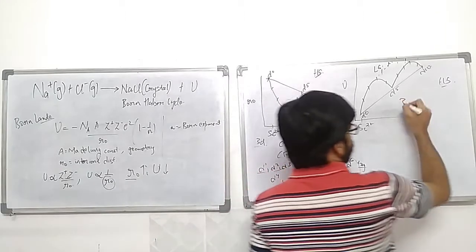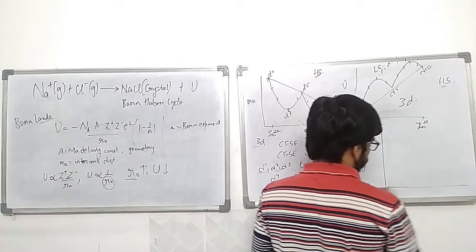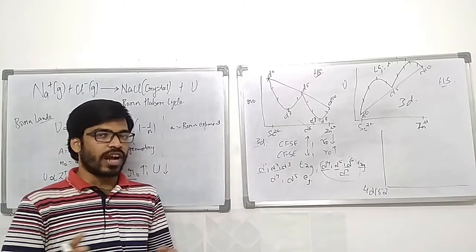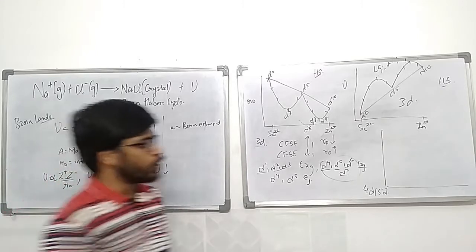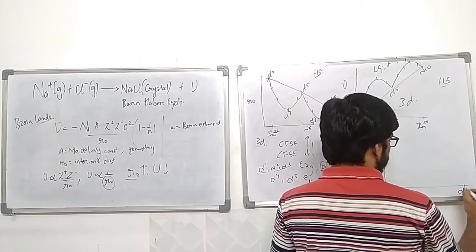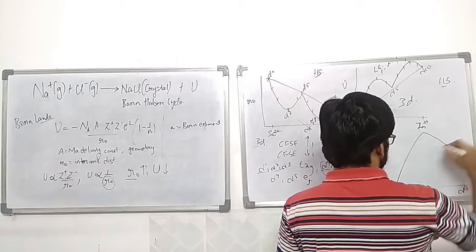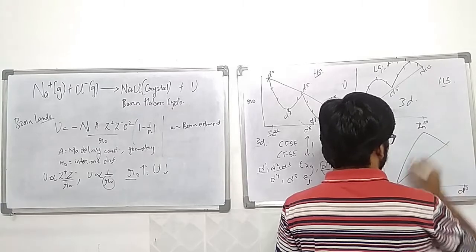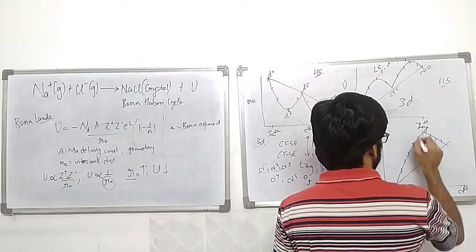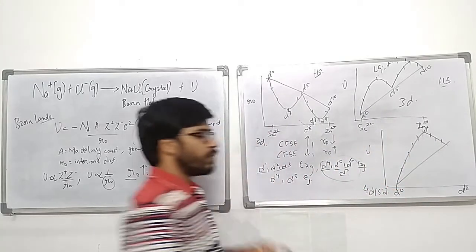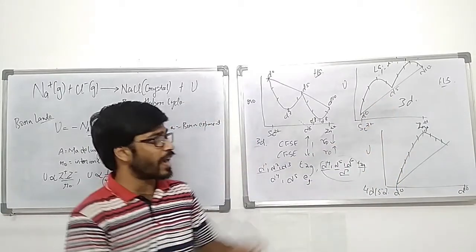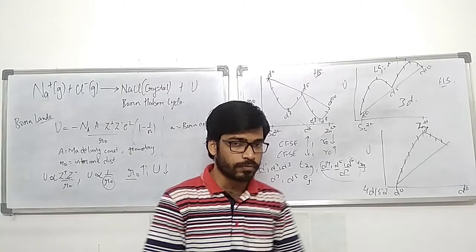For the 4D and 5D series, the crystal field splitting is large, meaning most complexes are always low spin. So from D0 to D10, you would expect only the low spin type of plot, with the peak at D6. In the 3D series, however, both low spin and high spin are possible, which is why two different plots are observed.